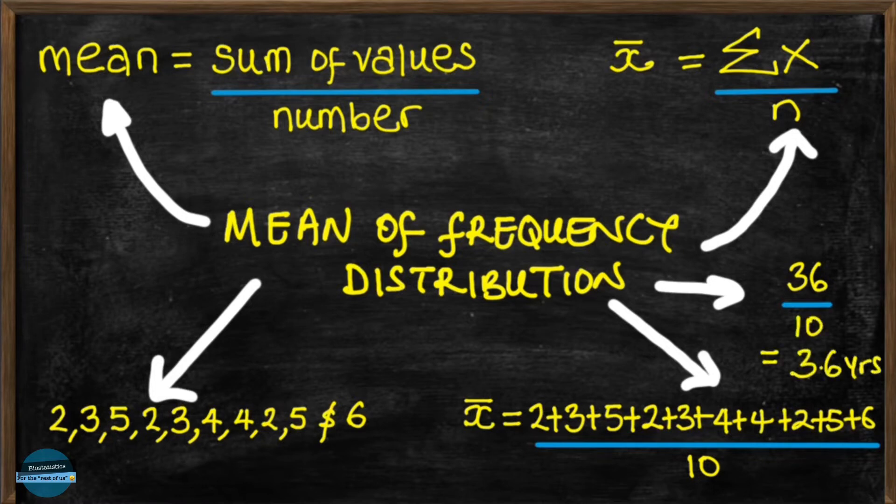Easy peasy right? But what happens when we don't have a regular list of values? What happens when what we have are the values presented to us in a frequency table?